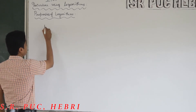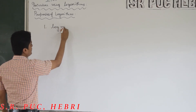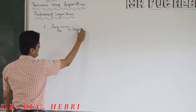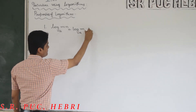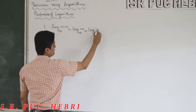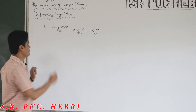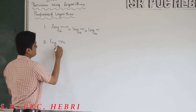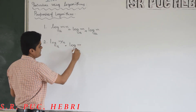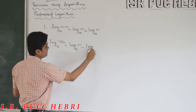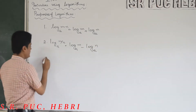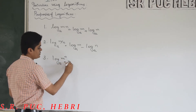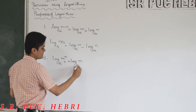The first formula you should remember: log of m·n to the base a equals log m to the base a plus log n to the base a. Second: log of m/n to the base a equals log m to the base a minus log n to the base a. Third: log of m^n to the base a equals n into log m to the base a.